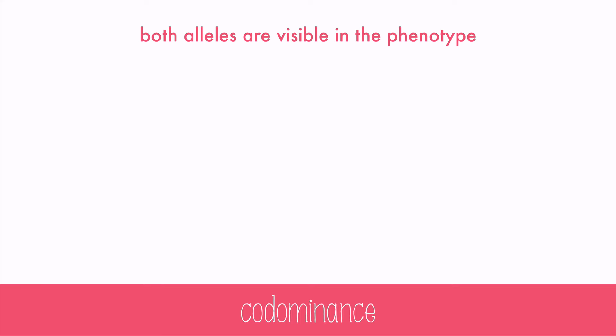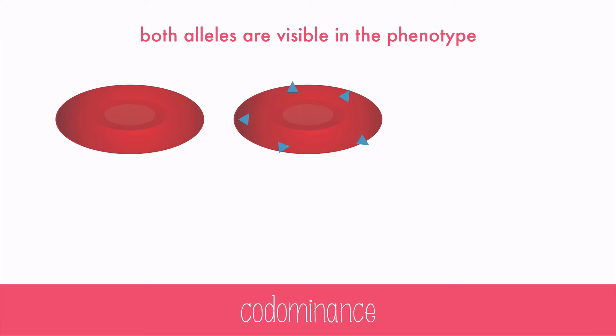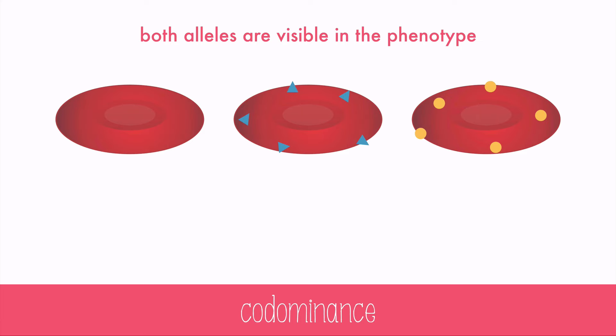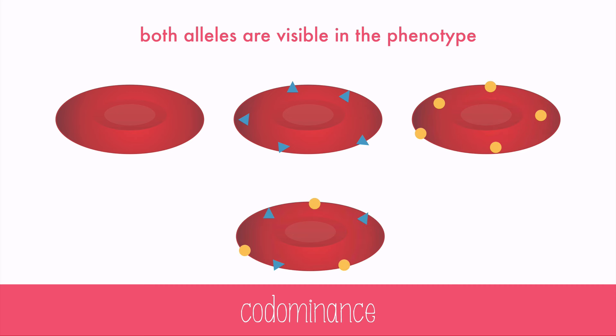Codominance is similar to incomplete dominance, but instead of a blend of the features, both alleles are visible in the phenotype. A great example of this is blood type. Type O blood has no protein markers called antigens, and it's essentially the recessive blood type. Type A has A antigens, type B has B antigens, and there's a fourth type called AB which has both A and B antigens. This is codominance. The alleles are written as capital letters with superscripts for the different alleles, assuming everything is homozygous except for the AB blood type.